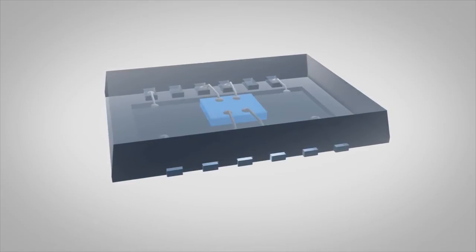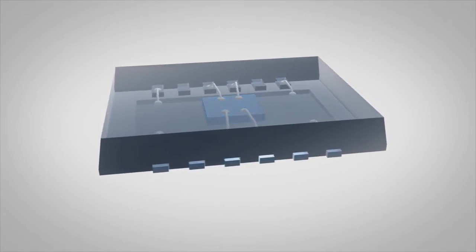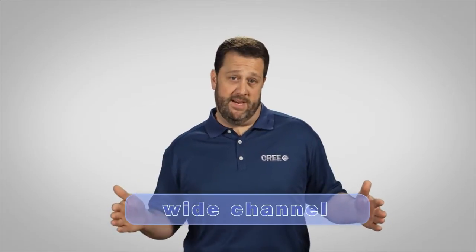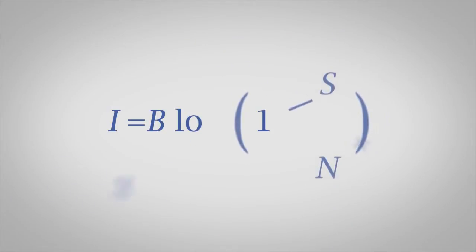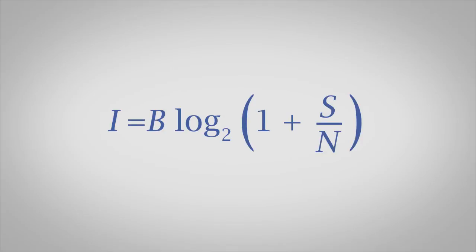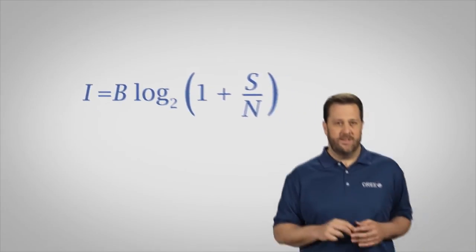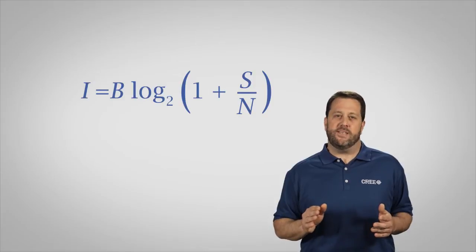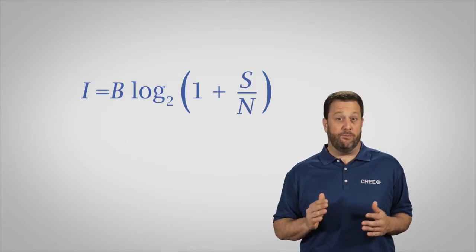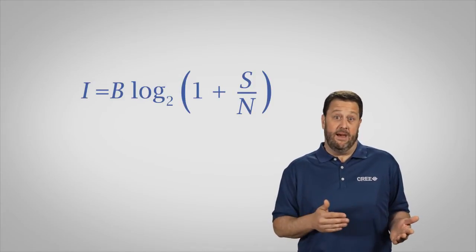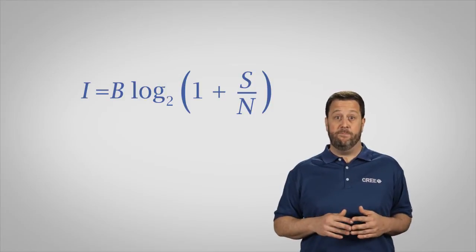Cree offers a portfolio of GaN-on-SiC transistors that enable this performance. The most significant feature of GaN-based amplifiers is wide channel bandwidth. The bandwidth of the channel dictates the information-carrying capacity of the channel. Claude Shannon at Bell Labs figured out how much information a channel theoretically could carry. Using this methodology, we have concluded that a single GaN-based amplifier would process more traffic than an InGaP or SiGe-based amplifier.